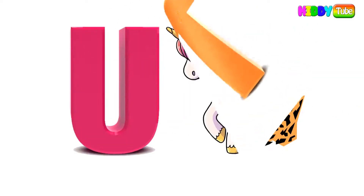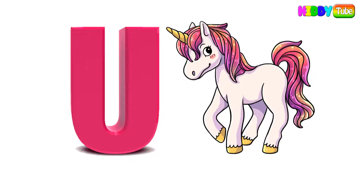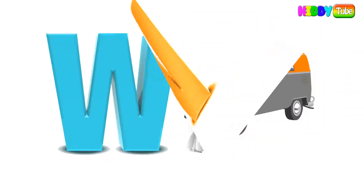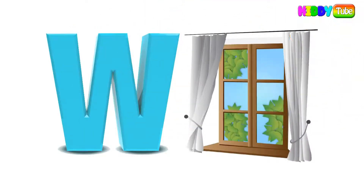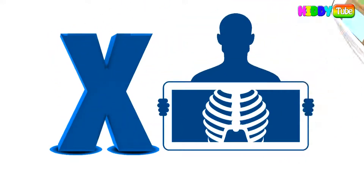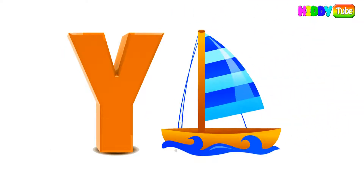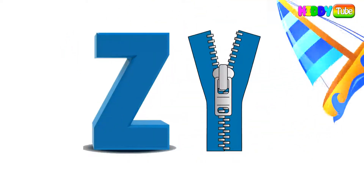U for unicorn, V for van, W for window, X for x-ray, Y for yacht, Z for zipper.